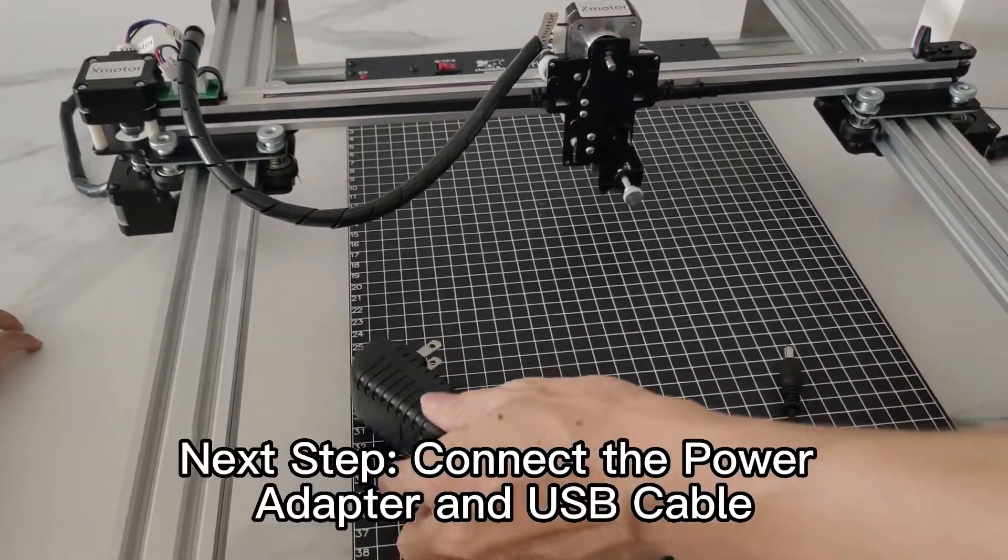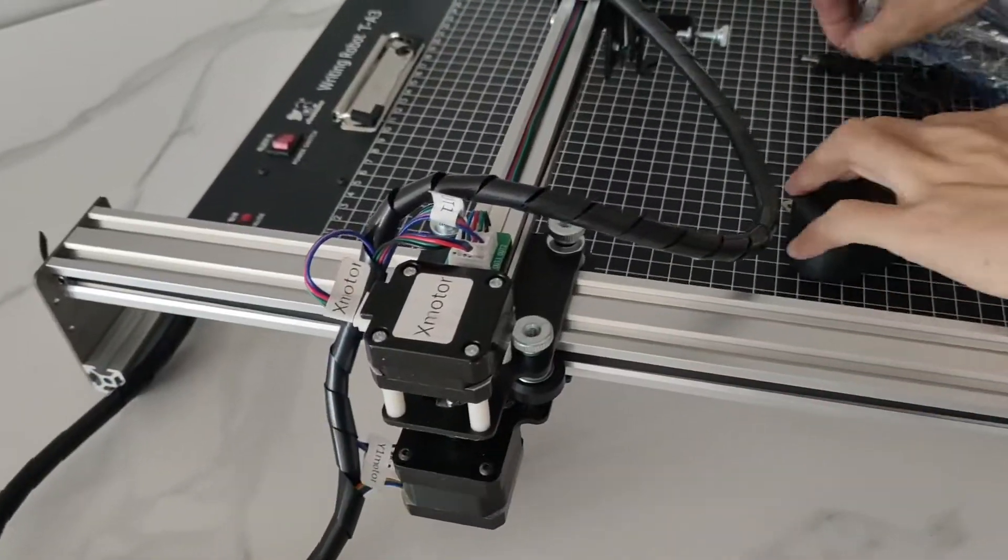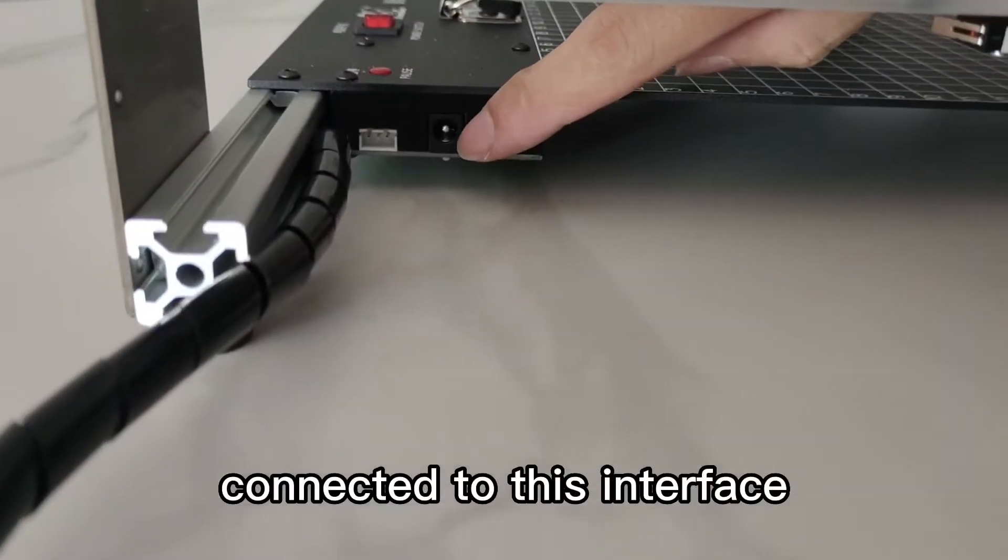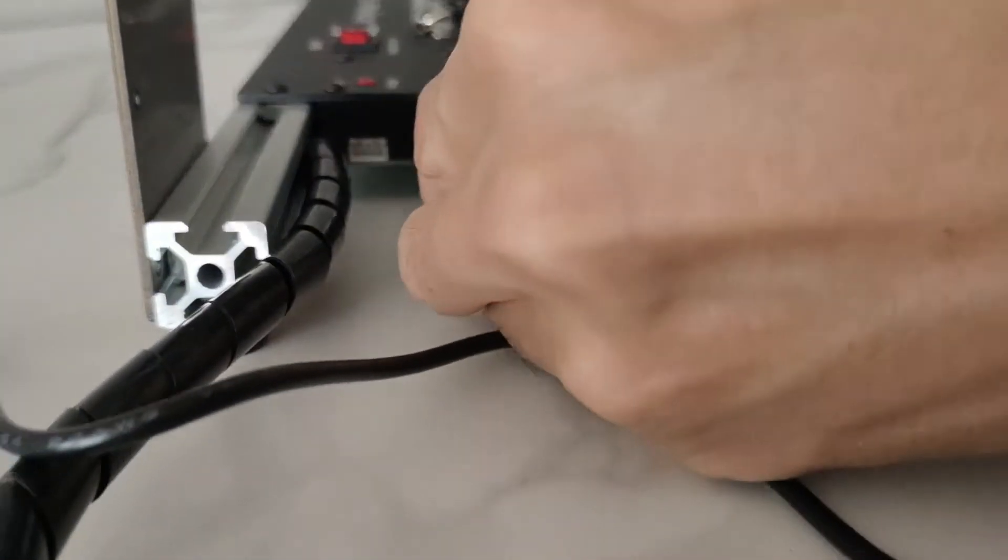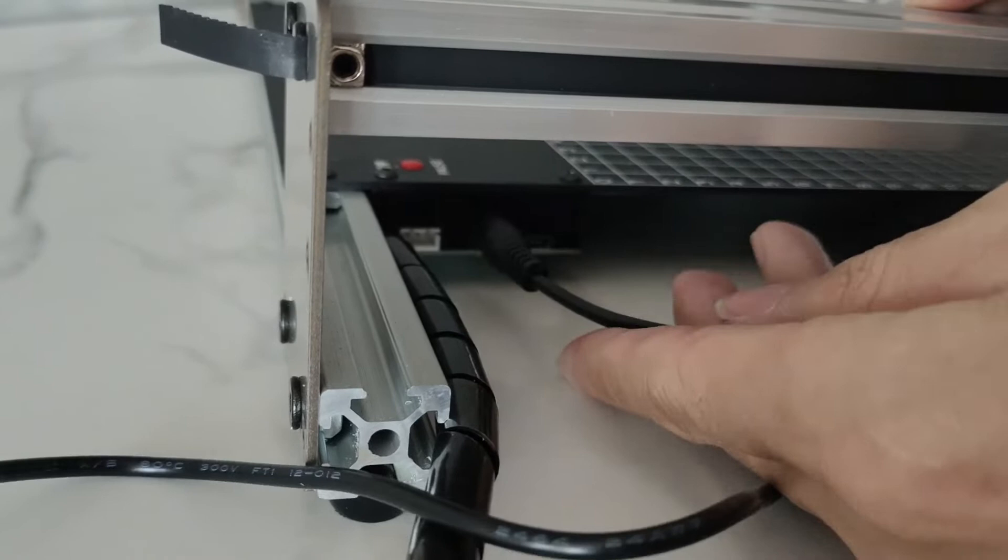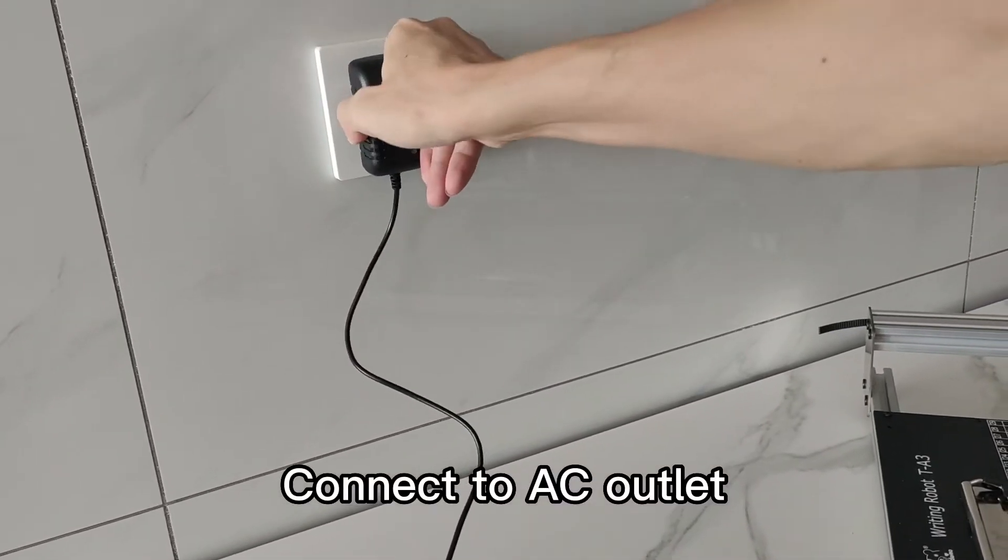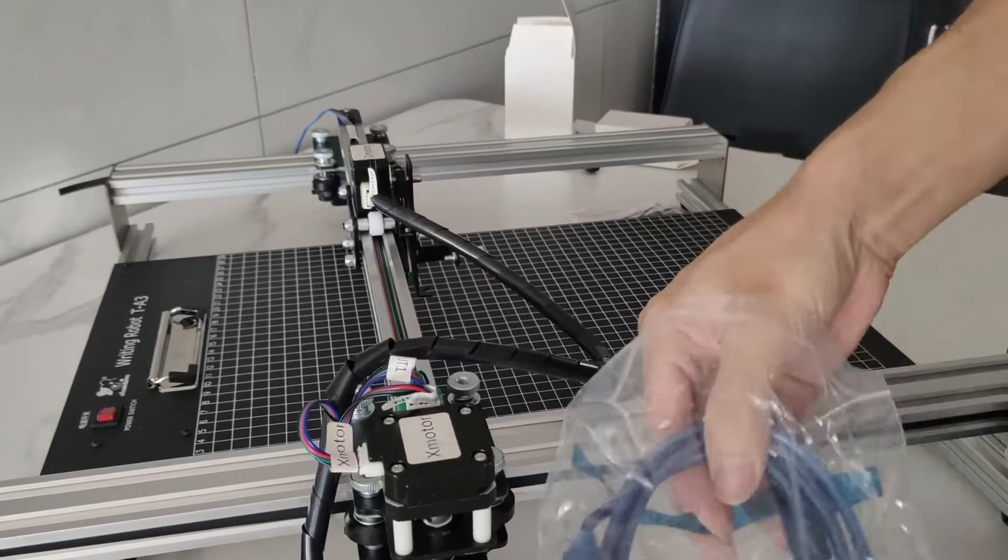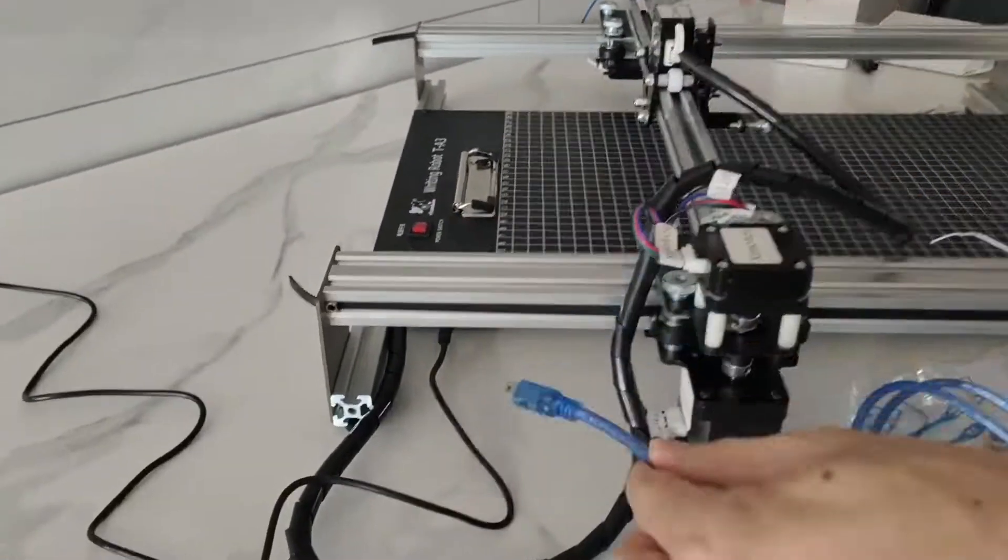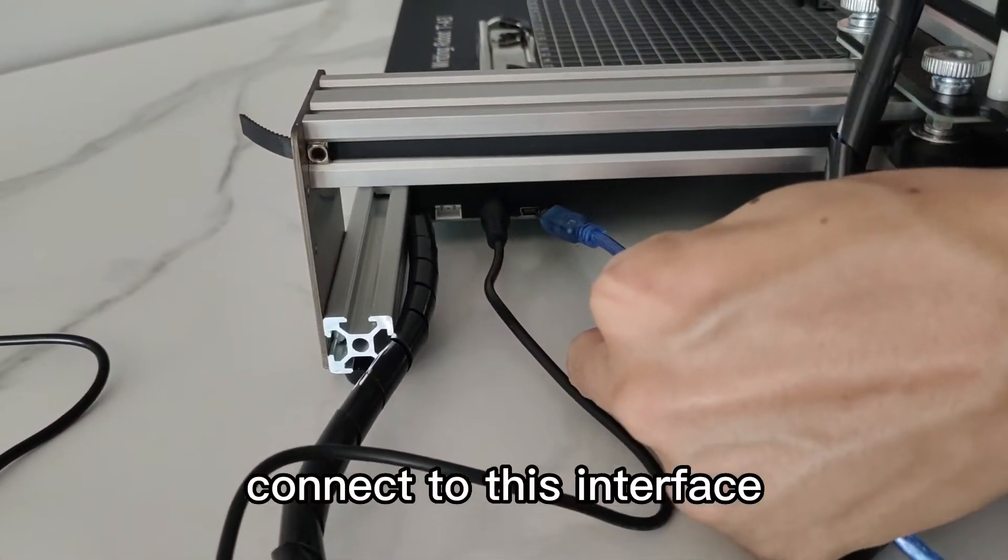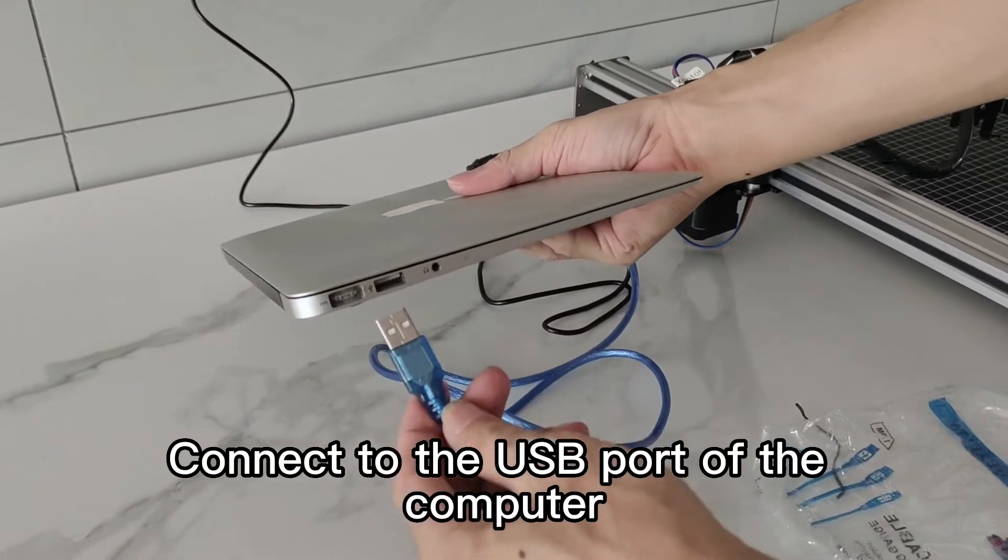Next step, connect the power adapter and USB cable. This is the power adapter. Connect it to this interface. Connect to AC outlet. Connect the USB cable. Connect to the USB port of the computer.